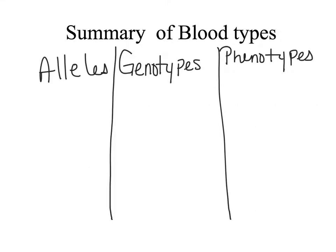Let's look at a summary of the blood types in humans. Remember, there are three possible alleles: A, B, and O. There are actually six possible combinations for genotypes. Remember, a genotype will only have two letters. An individual can be homozygous for A, having two alleles, or they can be heterozygous for A, having one A and one O.